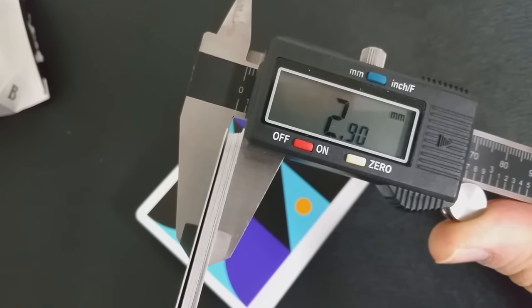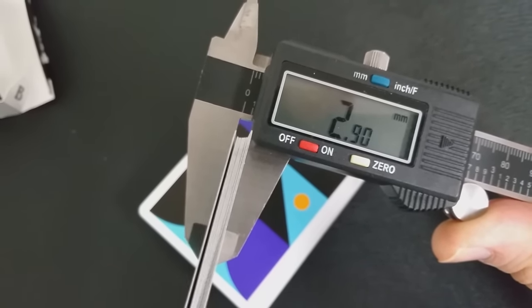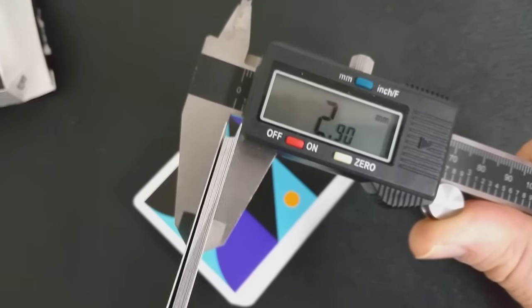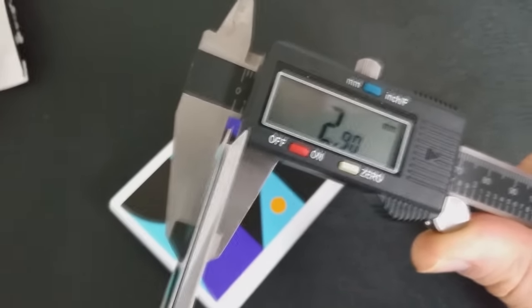2.90 is a thinner casino grade stock. It's on the thinner side. It's about the same thickness as the Denim deck from Dan and Dave, the Blue Bomber deck, the Snow Leopards that recently came out, the Grinders and the Artifice deck.